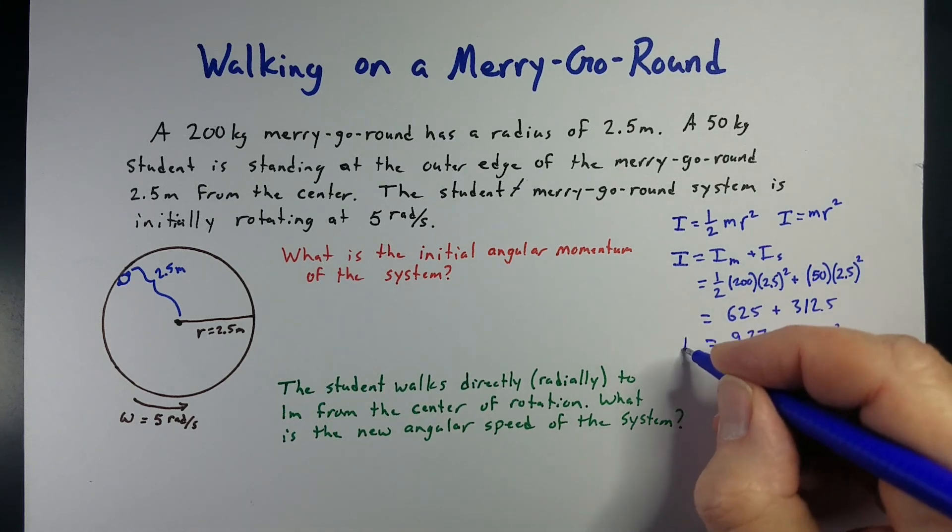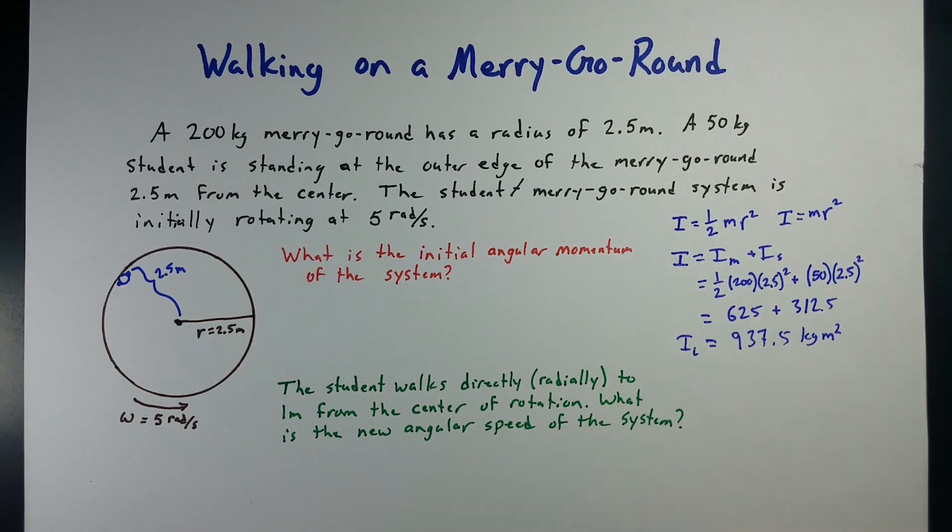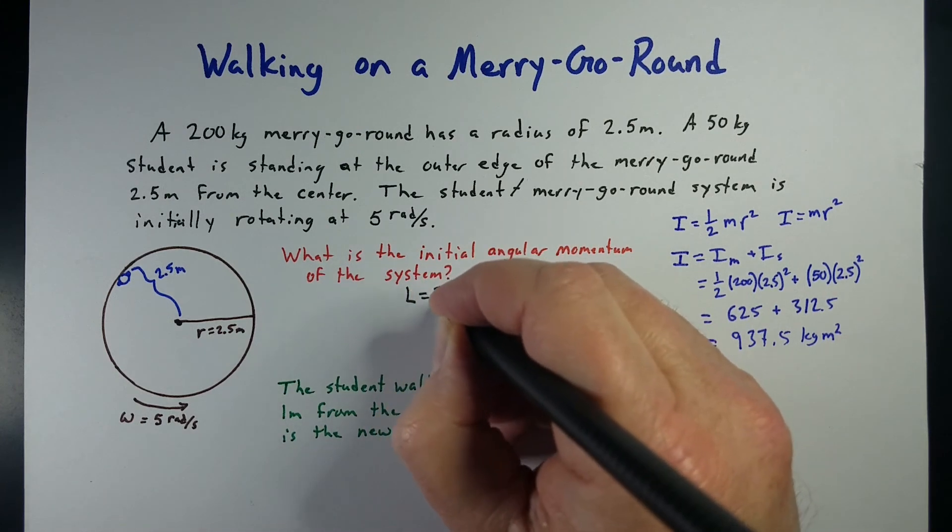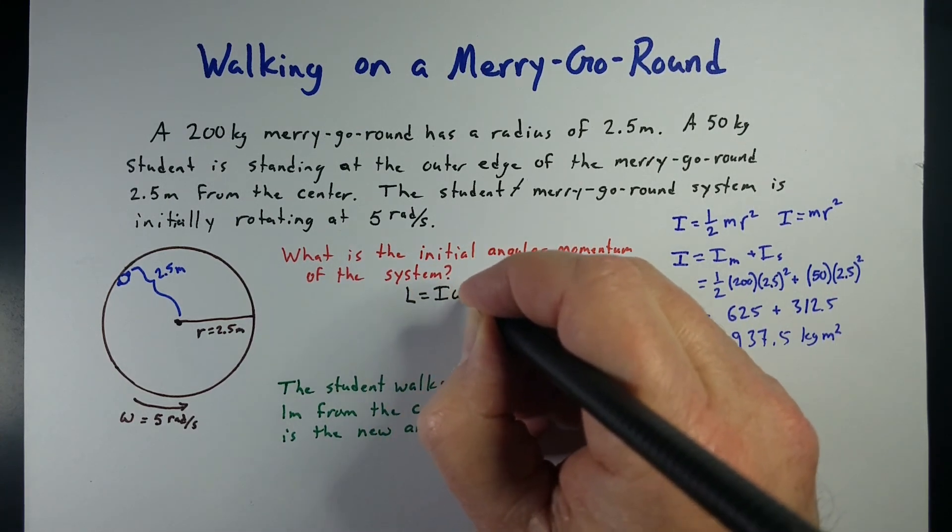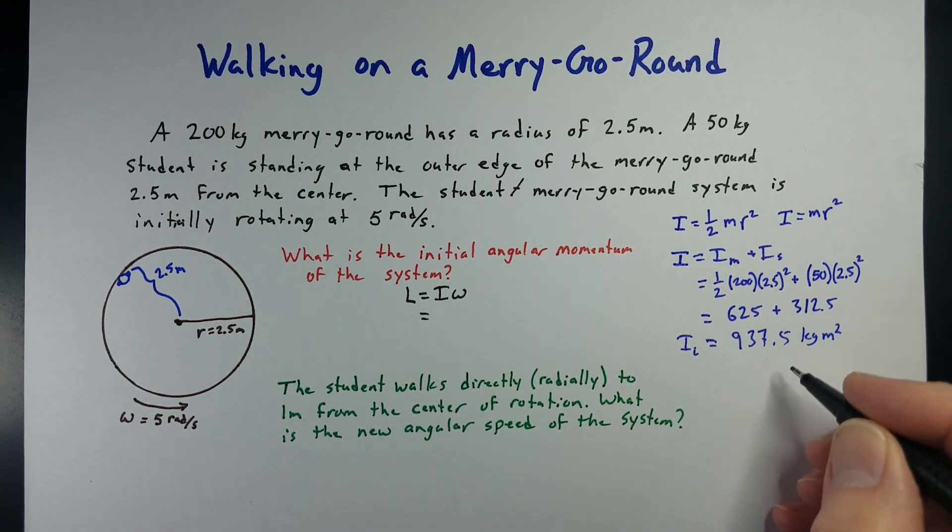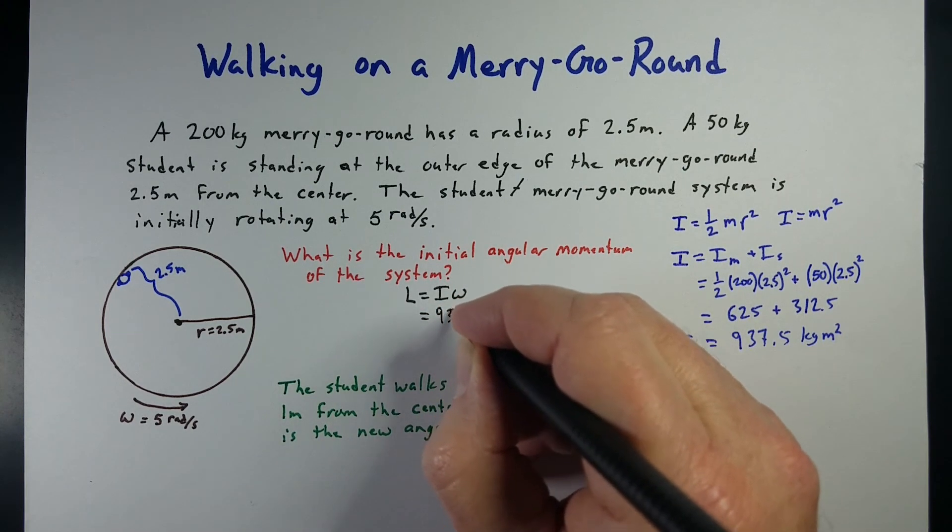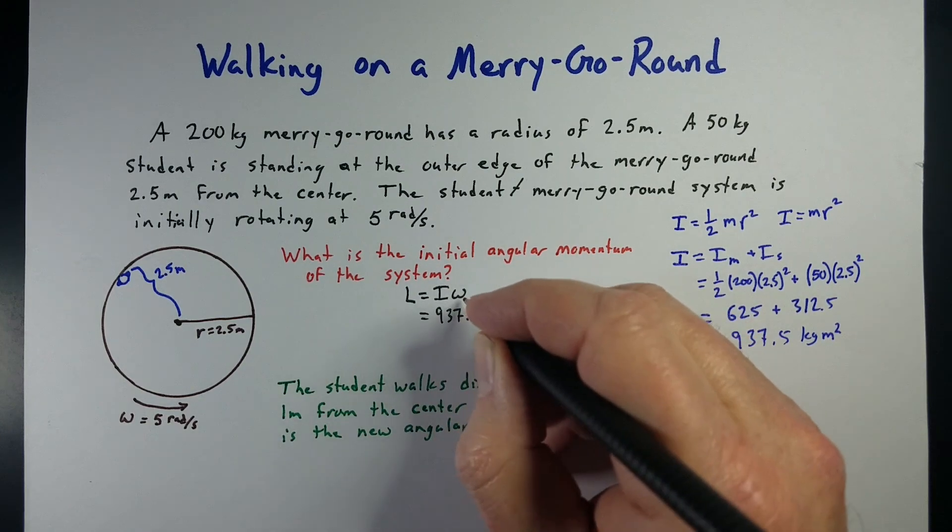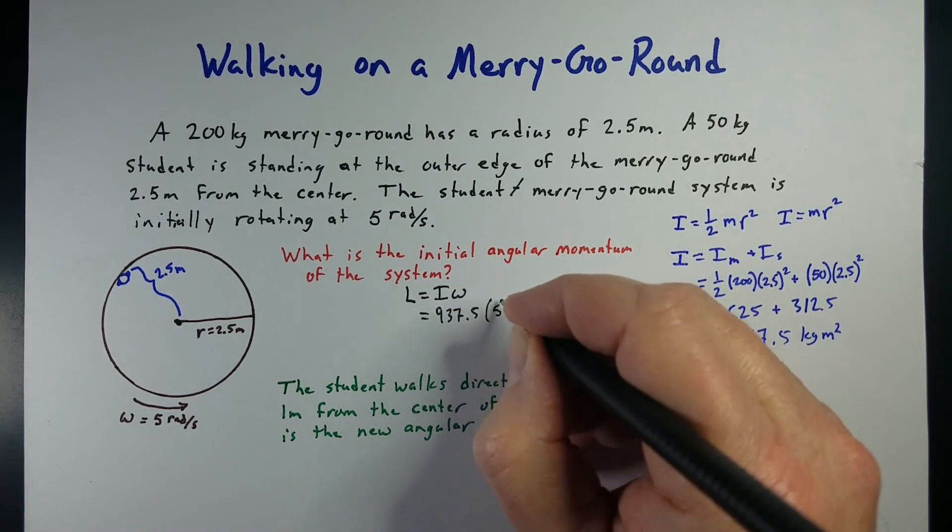Now we need to figure out, that's the initial, now we need to figure out the angular momentum of our system. Angular momentum, L, is equal to moment of inertia of our system times its angular speed. So, for this one, it's just the 937.5 times the speed of our system, which is 5 radians per second.